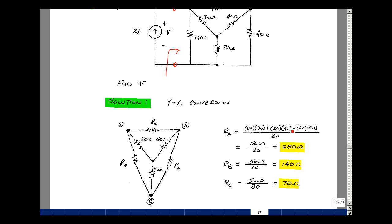For R sub B, we have the same numerator, but a different denominator. R sub B would be dividing by 40. And then for R sub C, we'd be dividing by 80. That gives us 140 and 70 ohms.